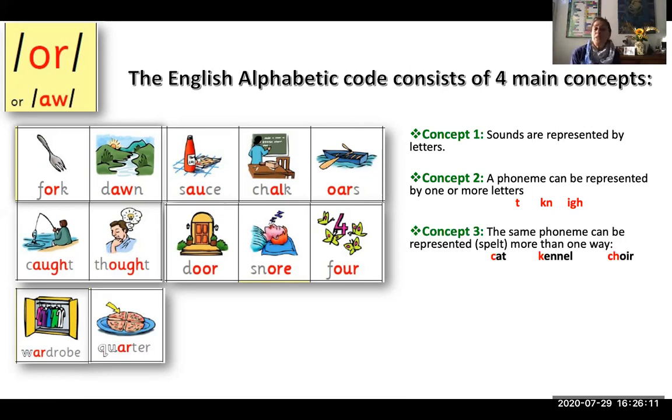Concept number three: The same phoneme or sound can be represented or spelled more than one way. As in 'c' of cat, of kennel, or of choir.